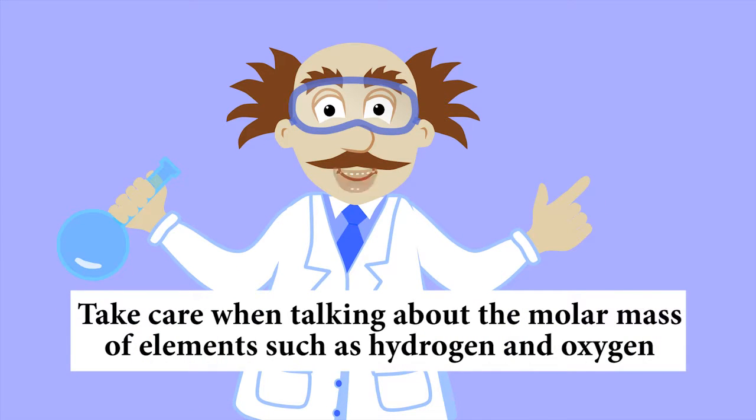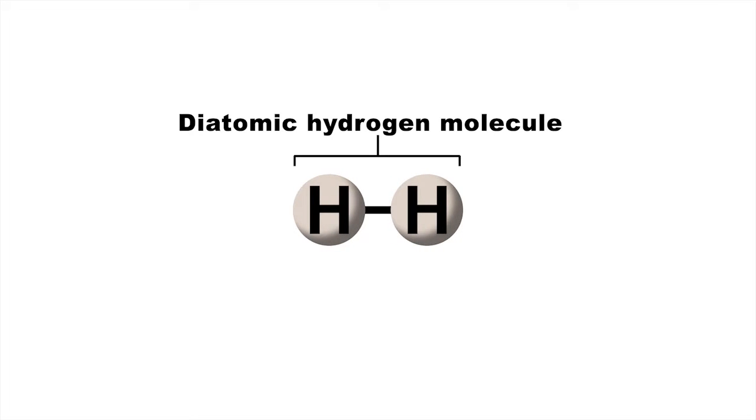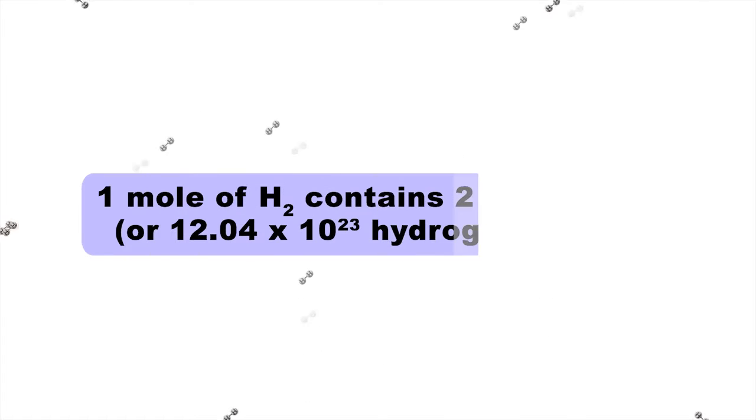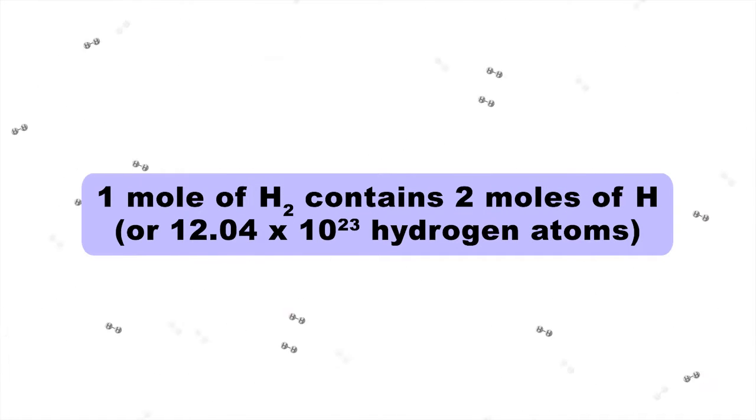You have to be careful when you talk about a mole of stuff like hydrogen and oxygen. In nature, elemental hydrogen exists as a diatomic molecule, or a molecule made up of two hydrogen atoms bonded together. So a mole of H2 gas contains two moles of hydrogen atoms, or a number of hydrogen atoms equating to twice Avogadro's constant.